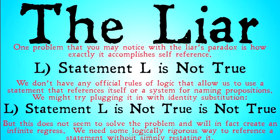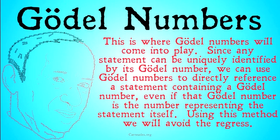You may think that this is a problem for the liar's paradox. However, Tarski and Gödel are going to demonstrate a way that we can actually get around this problem. If you're here because you think this is a problem for the liar's paradox, here is how we're going to prove that it's not. By the end of the video, we're going to show how we can solve this problem for the liar's paradox and demonstrate that this really still is a paradox — and that truth can't be defined within a language. This is where Gödel's numbers are going to come into play. Since any statement can be uniquely identified by its Gödel number, we can use Gödel numbers to directly reference a statement containing a Gödel number, even if that Gödel number is the number representing the statement itself.